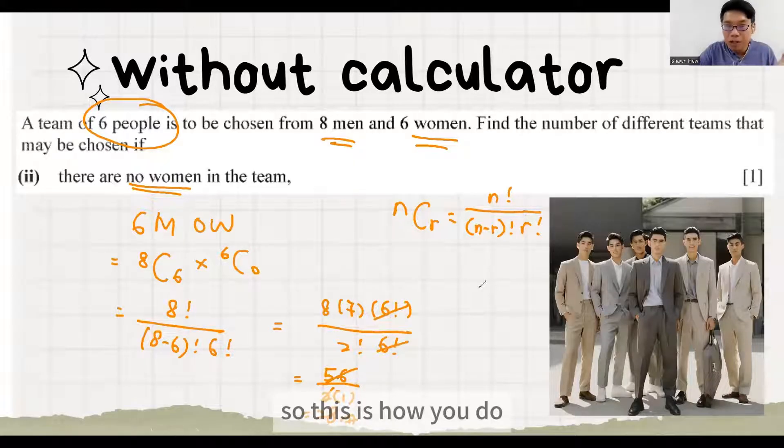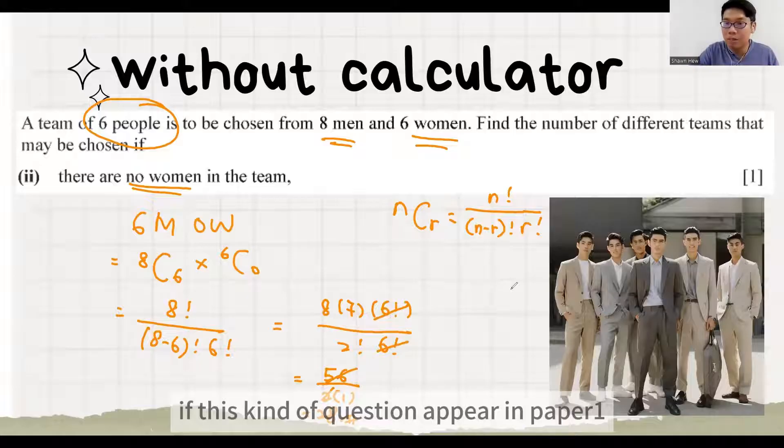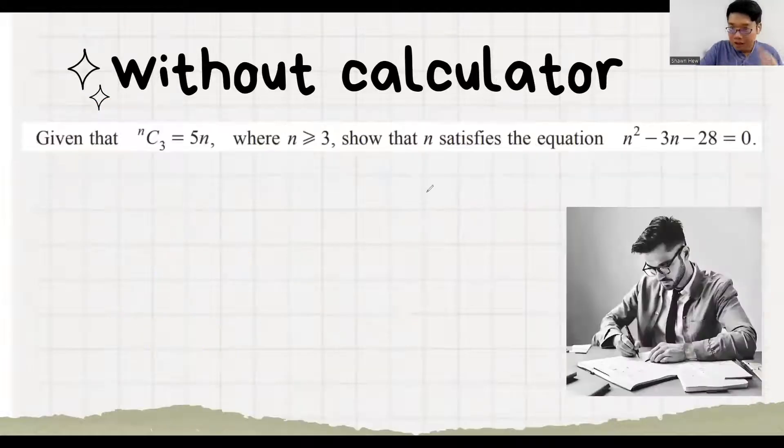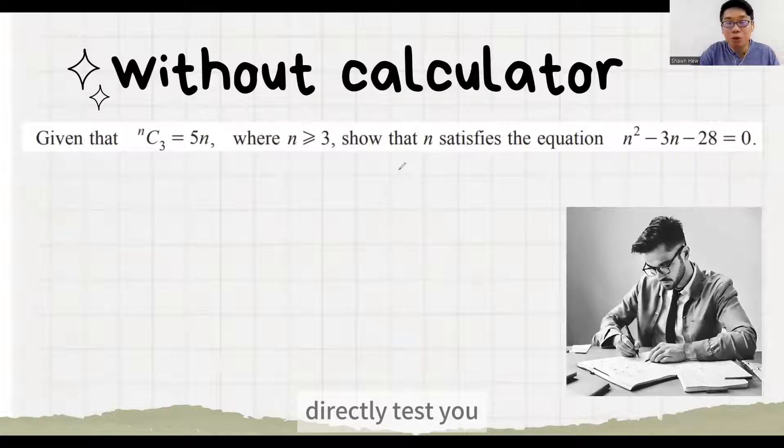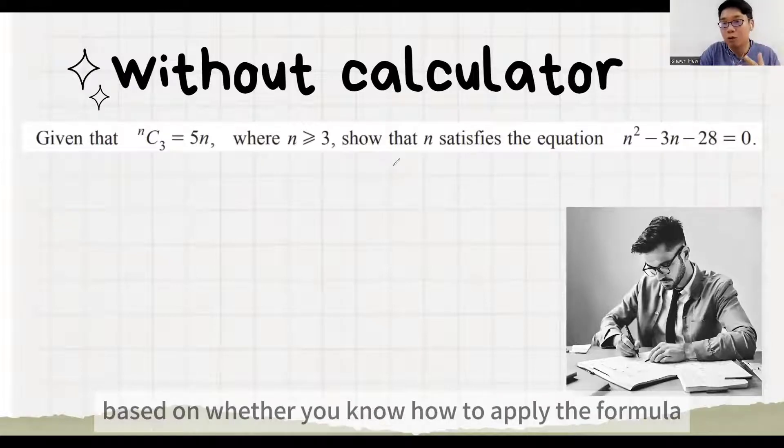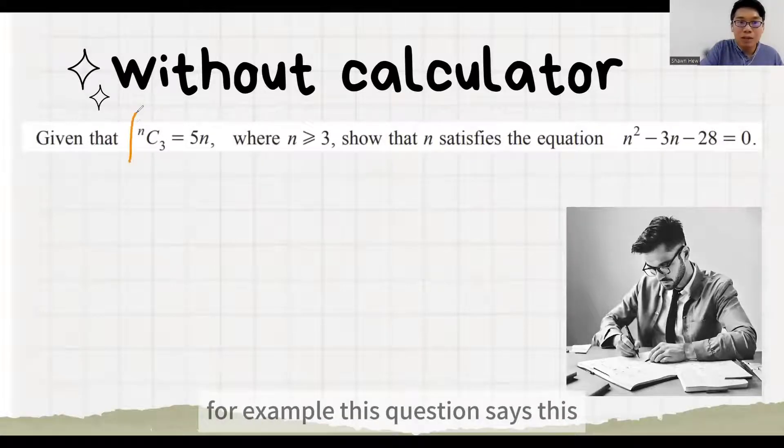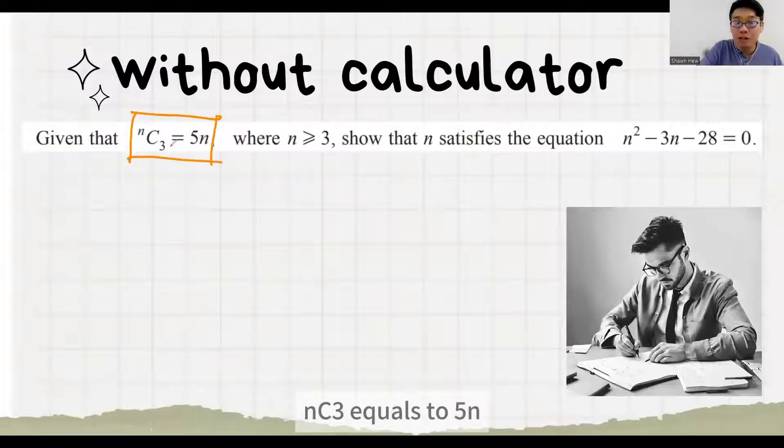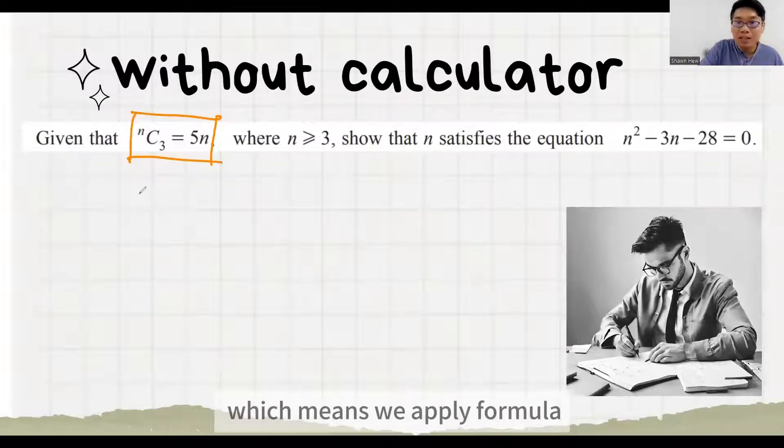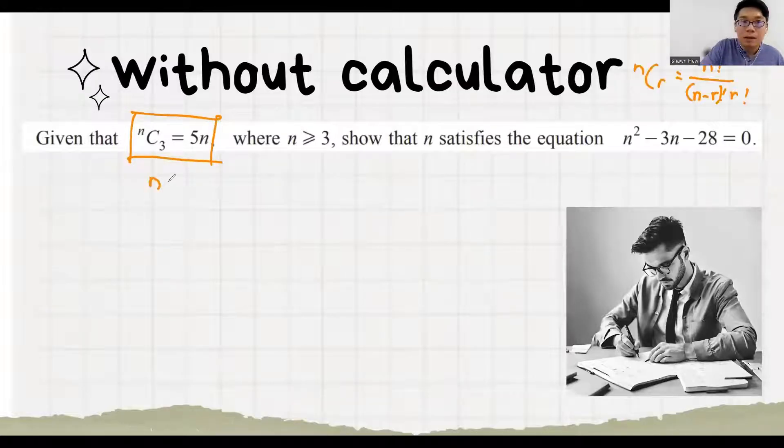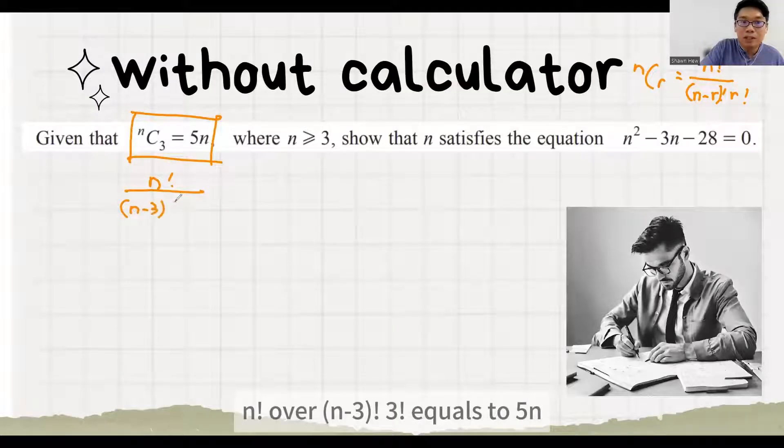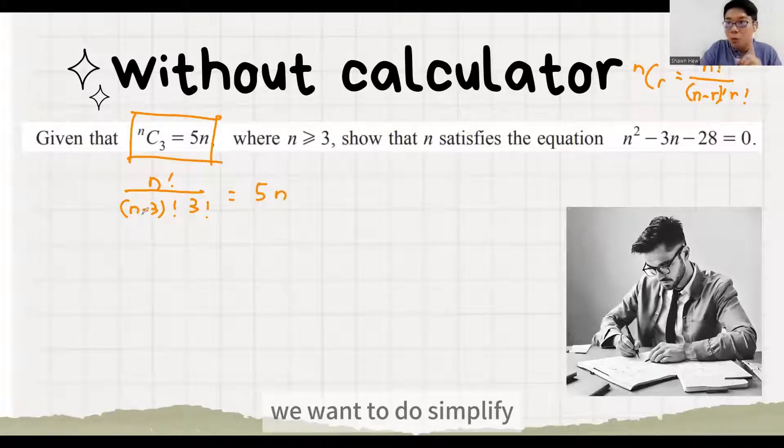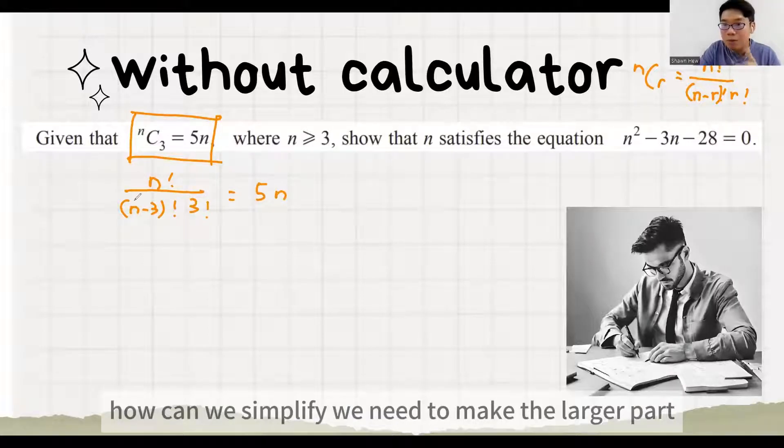So this is how you do if this kind of question appear in paper 1. Next type of question directly tests you based on whether you know how to apply the formula. For example, this question says nC3 equals to 5n, which means we apply formula n factorial over n minus 3 factorial, 3 factorial equals to 5n. We want to do simplify. How can we simplify?